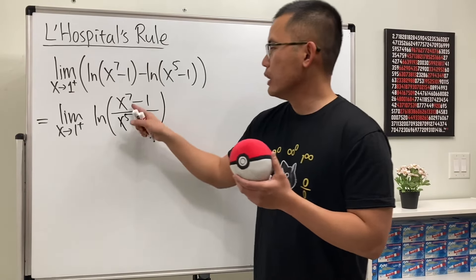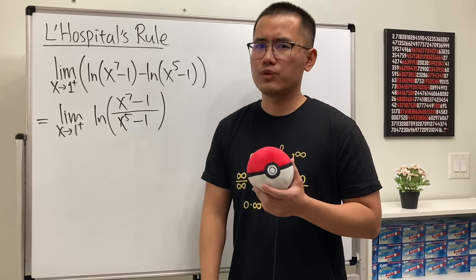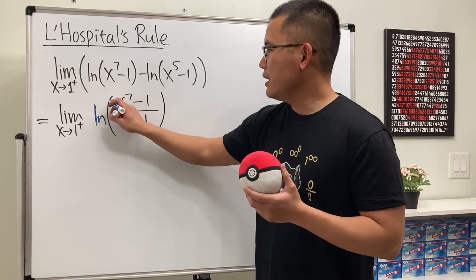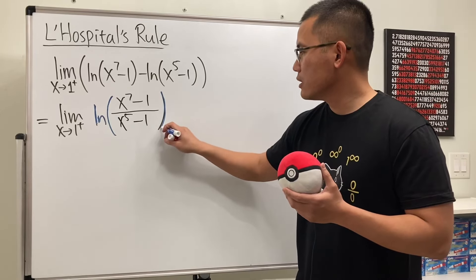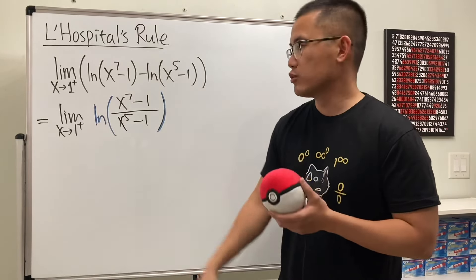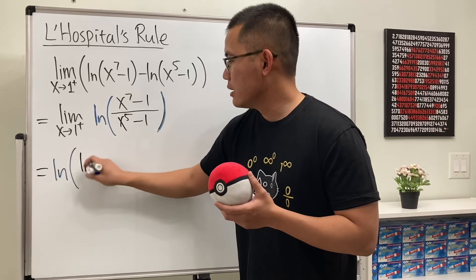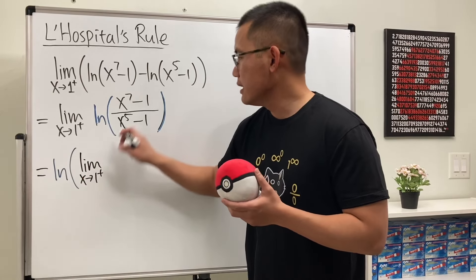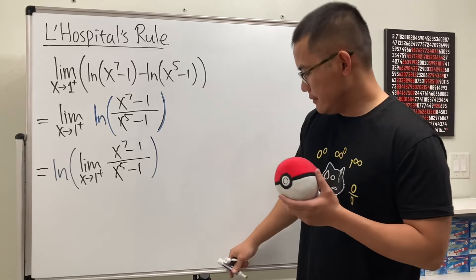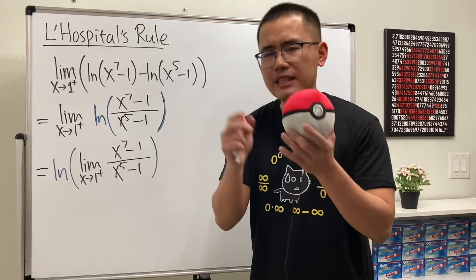When we put 1 plus into the x here and here, we get 0 over 0 inside of the natural log. Now, natural log is a continuous function, so we can actually do the following: we can just do the limit of the inside, and then take the natural log at the end. So this is the same as writing the natural log on the outside, and then the limit as x approaching 1 plus of x to the 7th minus 1 over x to the 5th minus 1. We can take the limit inside out.